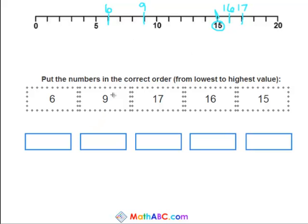So now they're in order for us. The lowest number is 6. Then it's 9. So we have 15, 16, and the last number, our highest number, is 17.